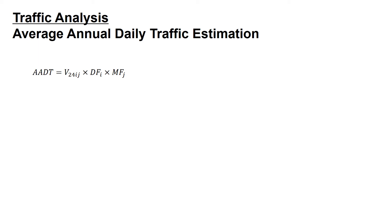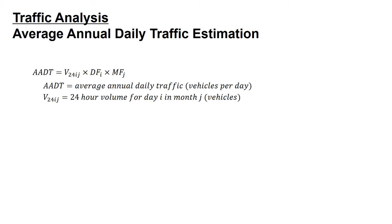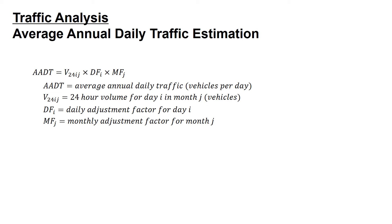Within the traffic analysis section, we're going to review the average annual daily traffic estimation equations. AADT is equal to V sub 24IJ multiplied by DF sub IJ multiplied by MF sub J. The AADT is the average annual daily traffic, which is in vehicles per day. V sub 24IJ is the 24-hour volume for day I in month J, in vehicles. DF sub I is the daily adjustment factor for day I, and MF sub J is the monthly adjustment factor for month J.